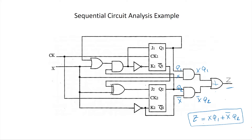With that confirmed, we will work with state tables and state diagrams using the Mealy representation. The next step is to figure out how many inputs and state variables we have. We have one input X, which can be 0 or 1, and two state variables Q1 and Q2, which can be 00, 01, 10, or 11. We also have a clock signal.